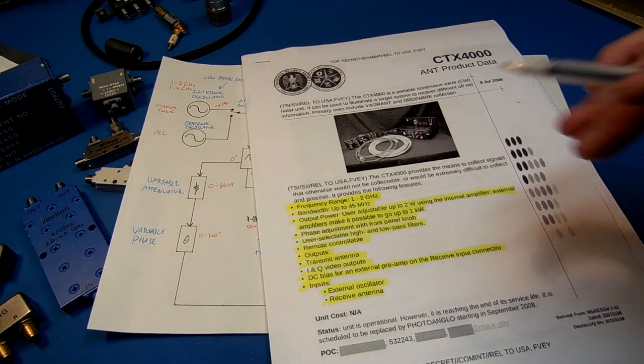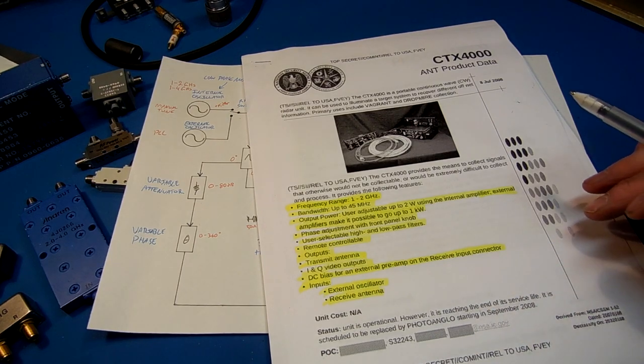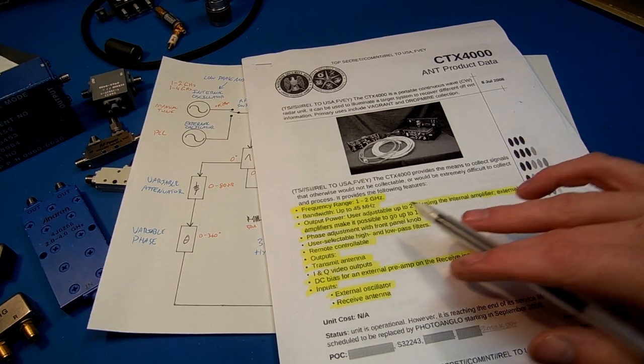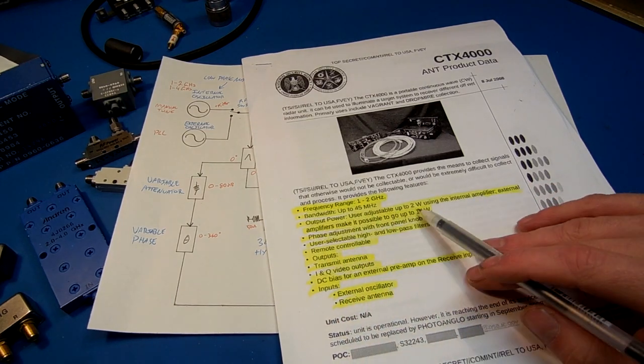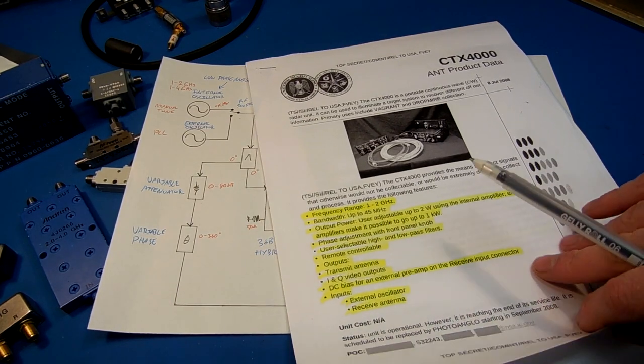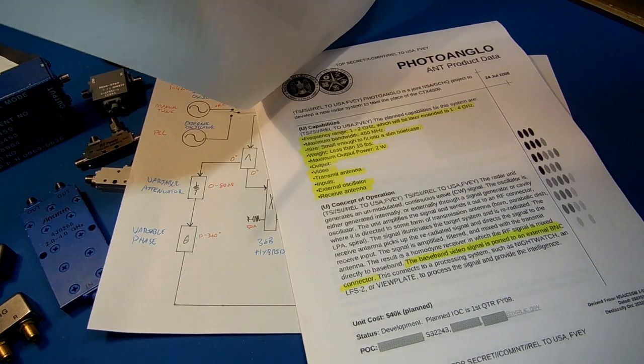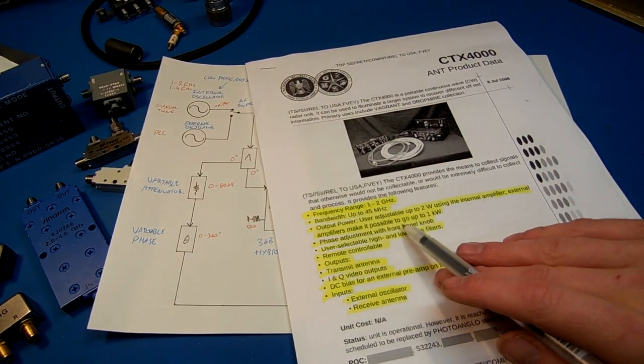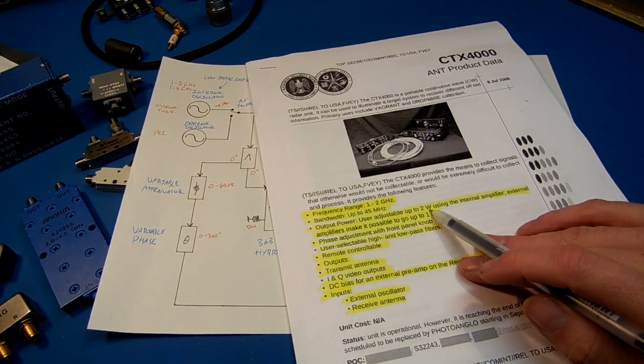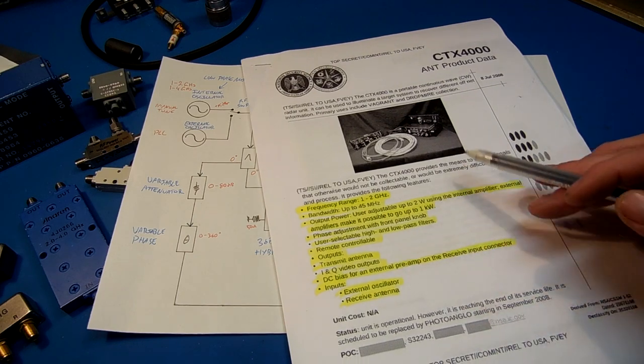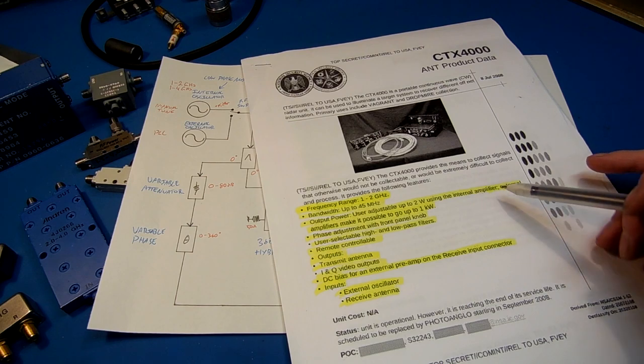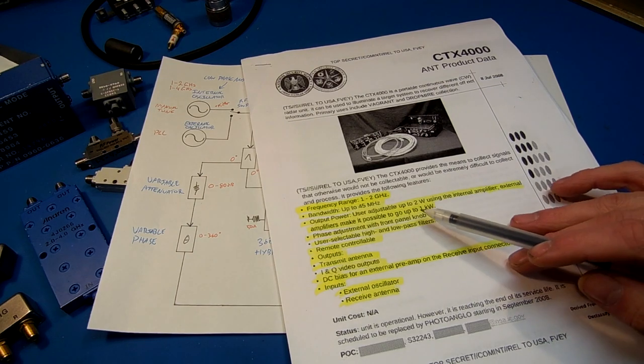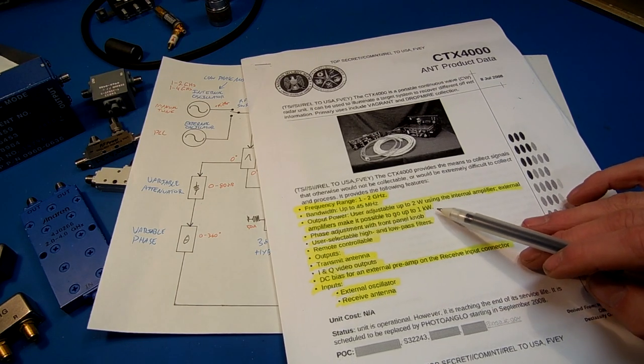The reason the bandwidth on the IF outputs are so high is to receive video signals, VGA monitor signals, or Super VGA. It tends to be very wideband, and you need a wideband IF. The output power for the CTX-4000 and the Photo Anglo internally is only 2 watts. You don't need a lot of power to illuminate the planted bug. There's an option for an external 1 kilowatt, 1,000 watt amplifier.